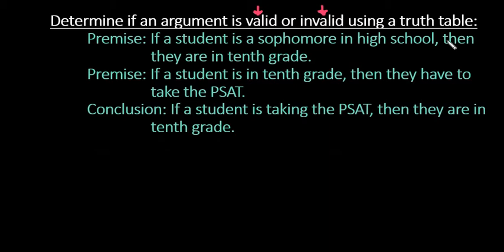We have two premises followed by a conclusion. The first premise is that if a student is a sophomore in high school, then they are in 10th grade. The second premise is if a student is in 10th grade, then they have to take the PSAT. Our conclusion is that if a student is taking the PSAT, then they are in 10th grade.